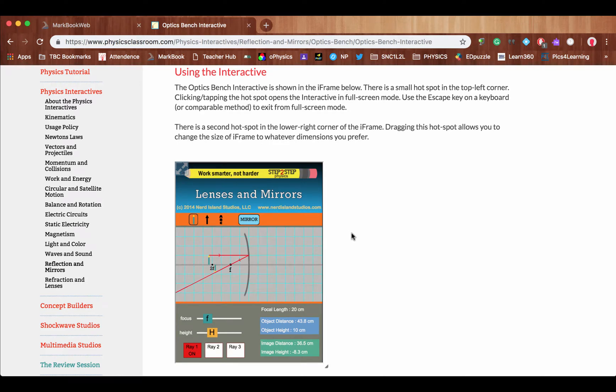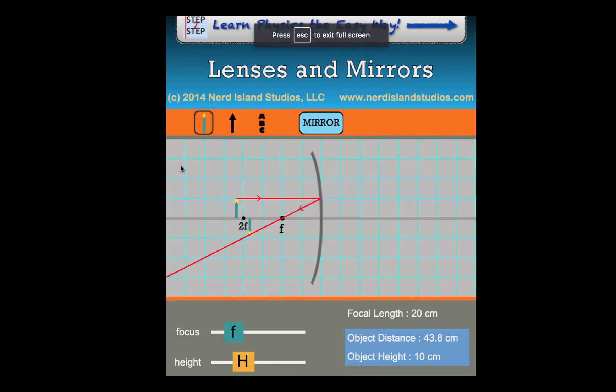Okay, we're going to look at drawing ray diagrams with a converging mirror. So we're going to be using physicsclassroom.com, and they have some interactives. So we go to full screen. So here we've got our converging mirror. We're going to switch it over to the arrow, which is our standard for the object.